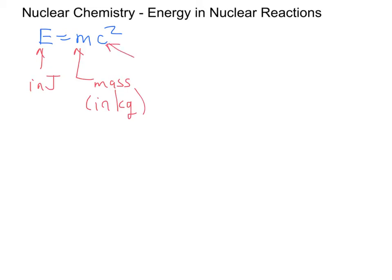And then c, we've used before, that's the speed of light, which is a constant, and that's in units of meters per second. When we're looking at these energy changes in nuclear reactions, what we are really looking at is a change in energy is equal to the change in mass times the square of the speed of light.